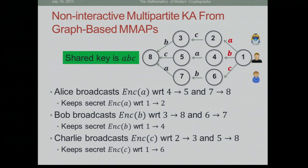Here is one way to do it based on graph-based multilinear maps. We have three chains — one for Alice, one for Bob, one for Charlie. Alice encodes the same value on one edge in each chain, broadcasts the values on Bob's and Charlie's chains, but keeps the value on her own chain to herself. Bob and Charlie do the same. The shared key is A times B times C. Each party has a chain where it knows all the encoded values, so they can compute an encoding of A times B times C. Eve is missing one edge on every chain, so she cannot.